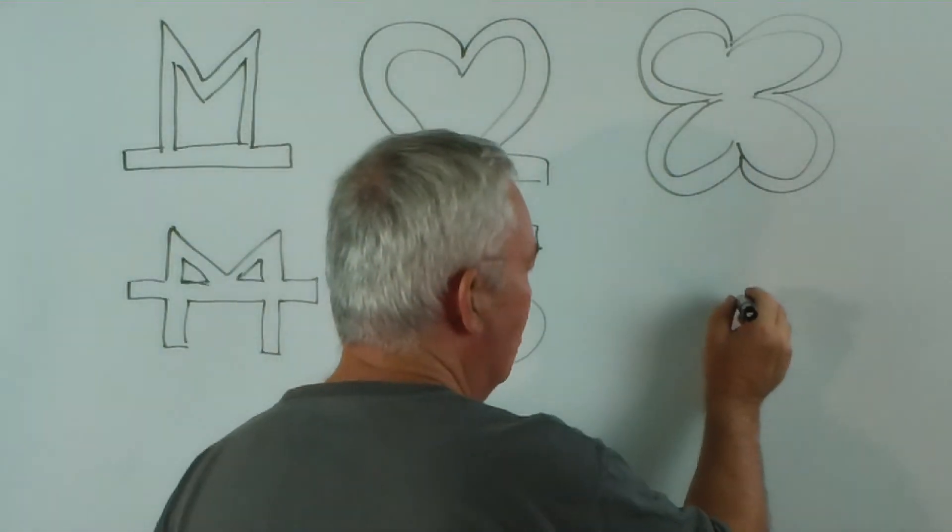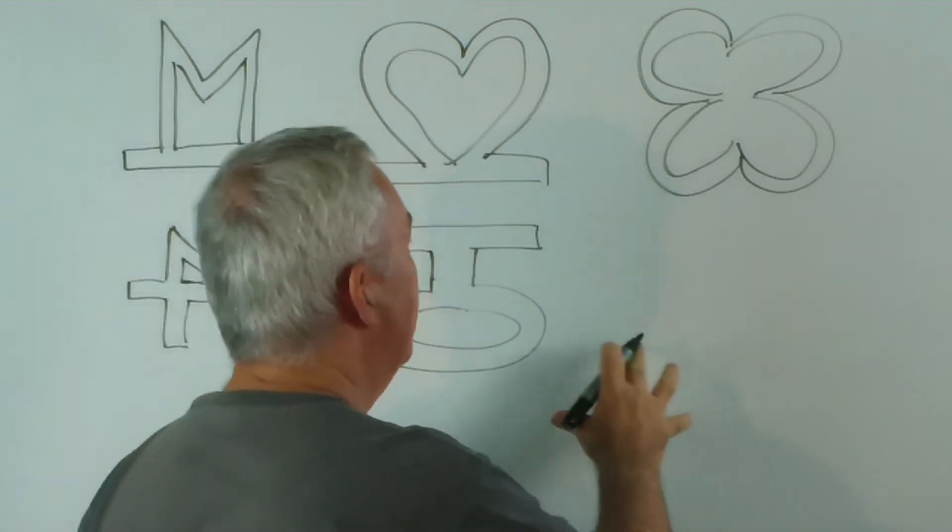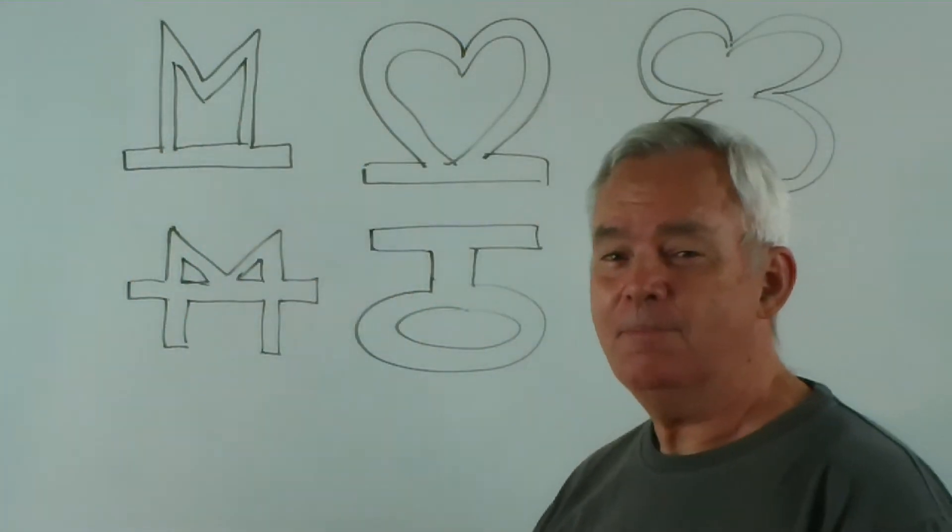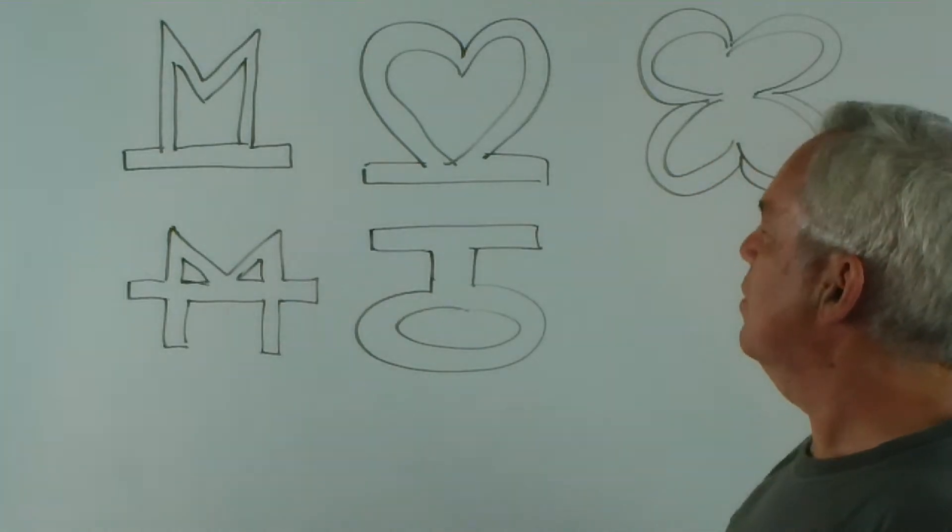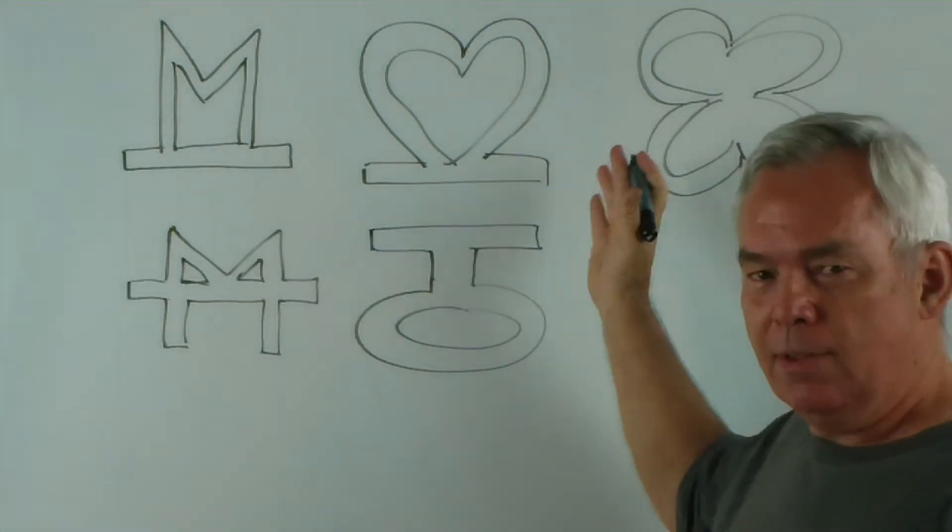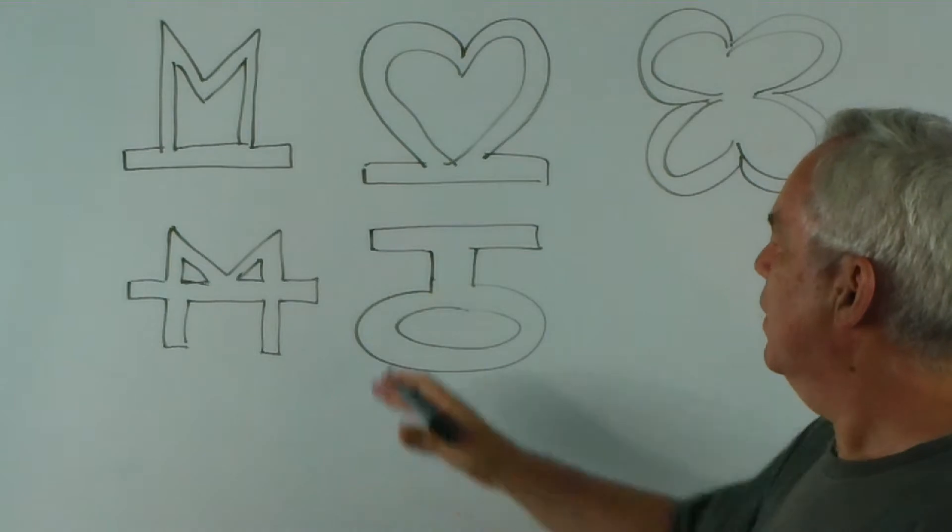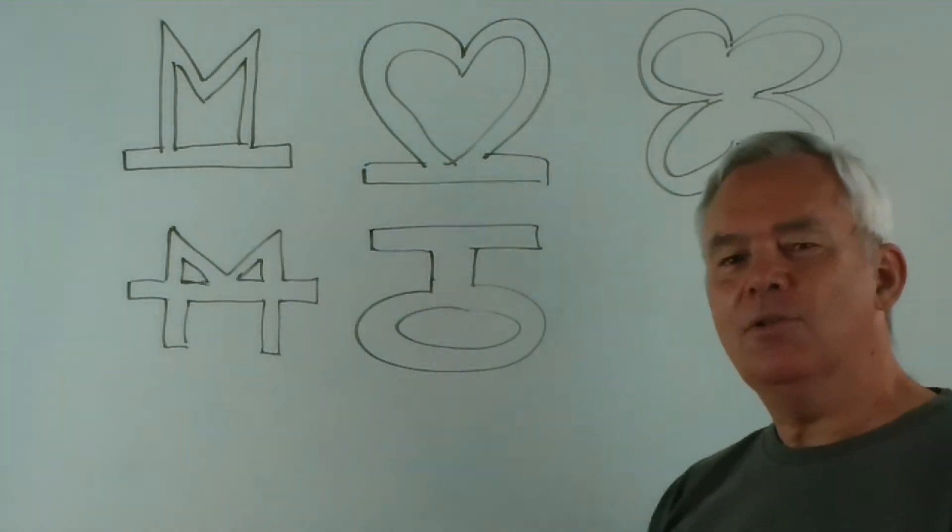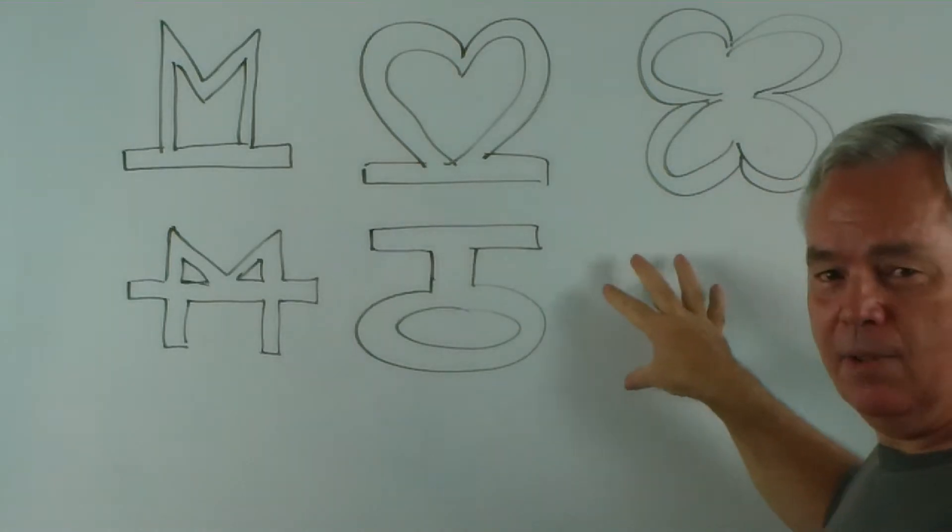And the question is, what shape goes here to continue this pattern? Now, it doesn't complete the pattern. There are other shapes, but they're in an order. They're in a particular order, the order in which I drew them. And I invite you to try to work out what shape belongs here.